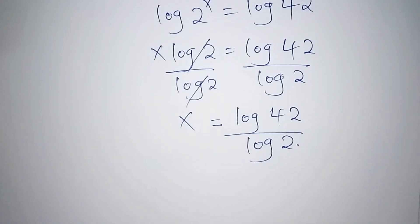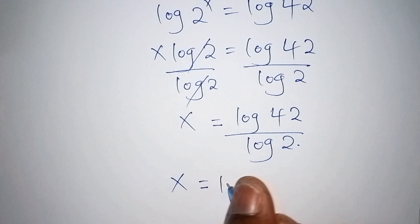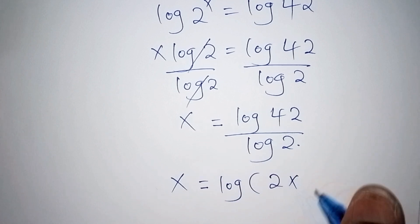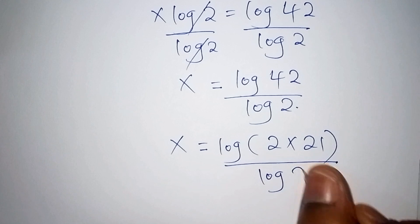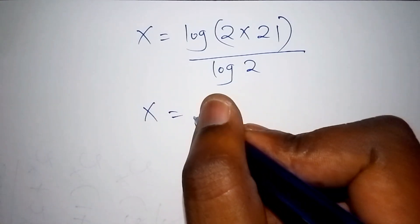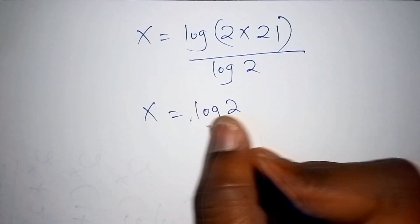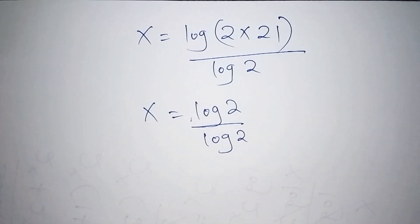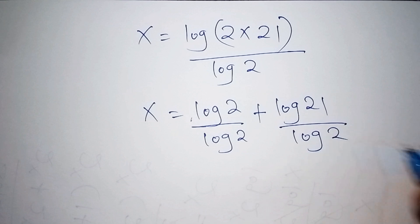We can factorize further by noting that log 42 can be written as log of (2 multiplied by 21). So x equals log(2 × 21) all over log 2. We then split this using the logarithm addition rule: x equals log 2 over log 2, plus log 21 over log 2.